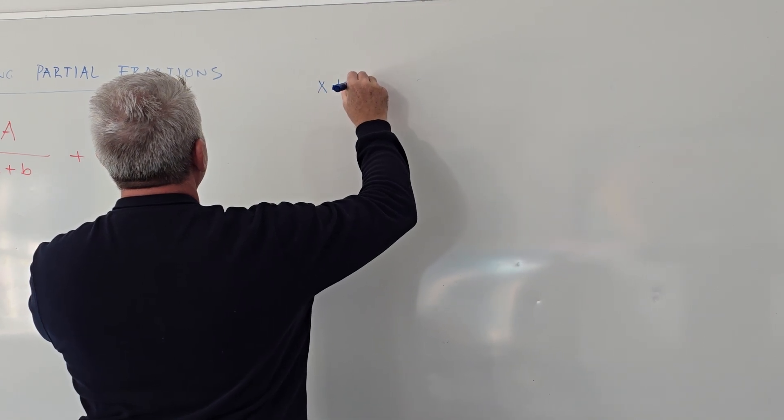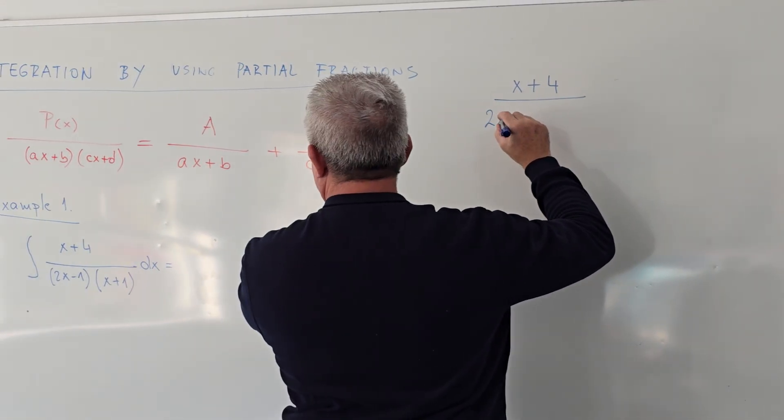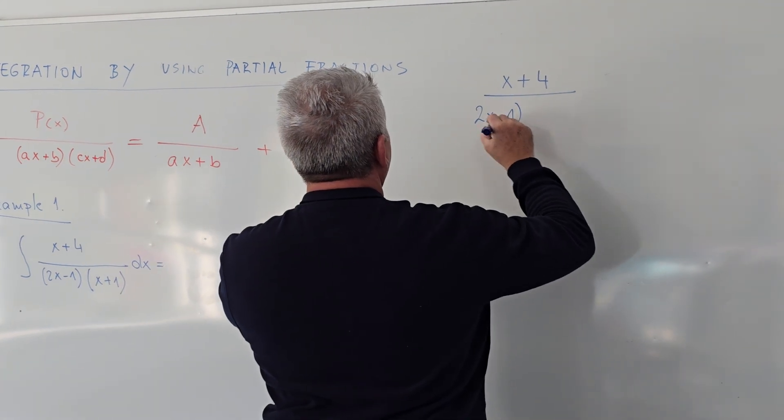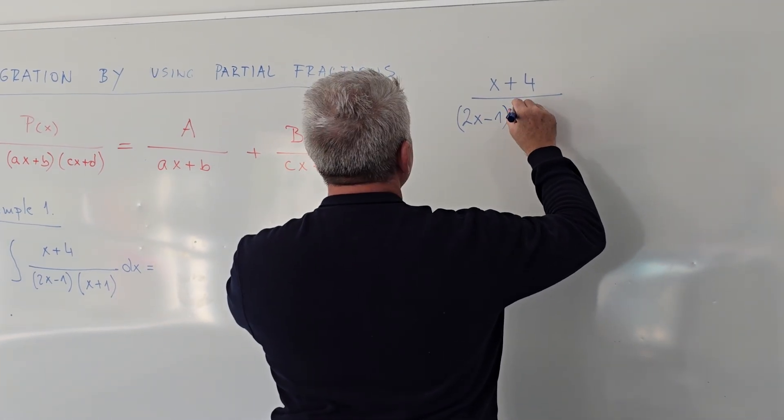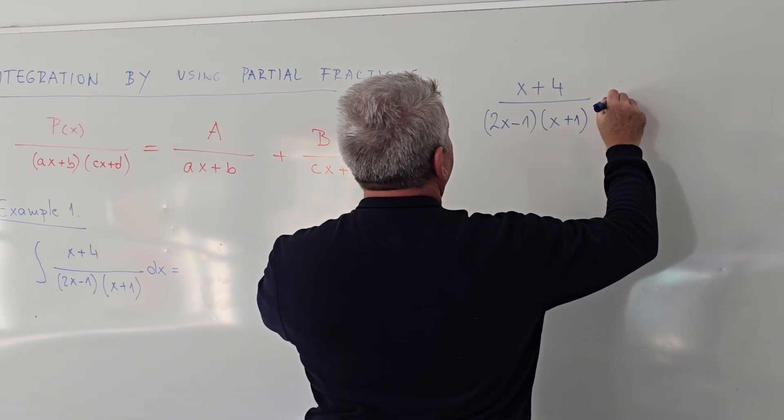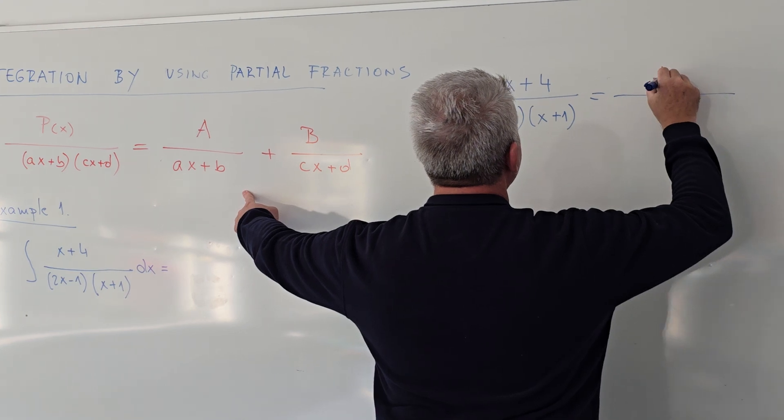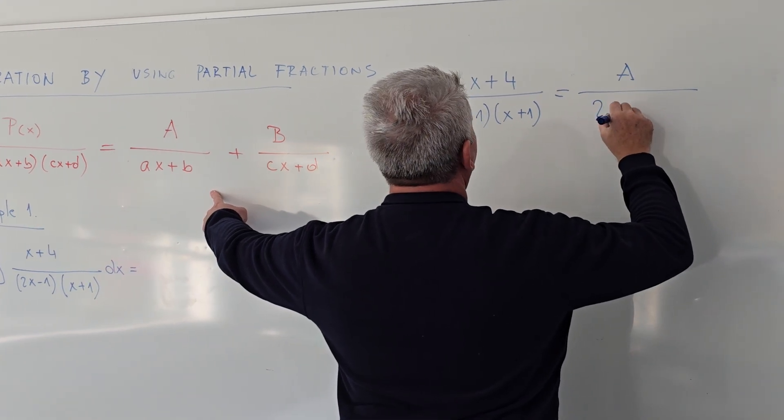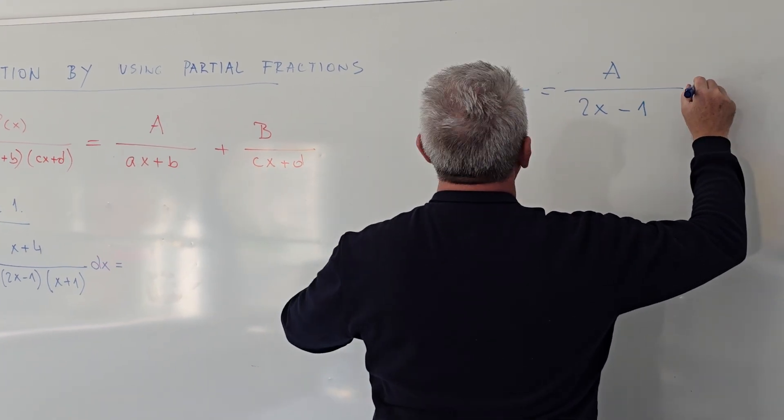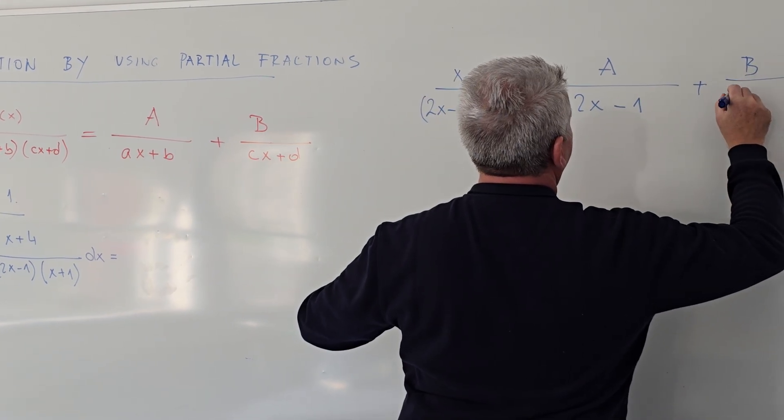You can find what are coefficients A and B. So (x + 4) over (2x - 1) times (x + 1). The rule says it must be shown in this form: A over (2x - 1) plus B over (x + 1).